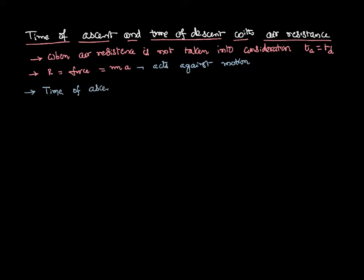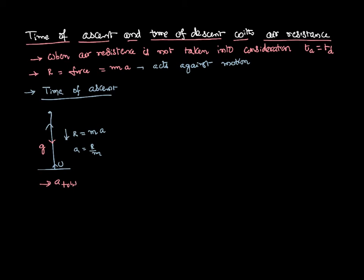Let us calculate the time of ascent. Consider a body moving up with initial velocity U. Since it is moving up, the air resistance acts in the downward direction. So the acceleration is in the downward direction, and simultaneously acceleration due to gravity also acts downward. As both act in the downward direction, the total acceleration is G plus R by M. So the time of ascent equals U divided by G plus R by M.